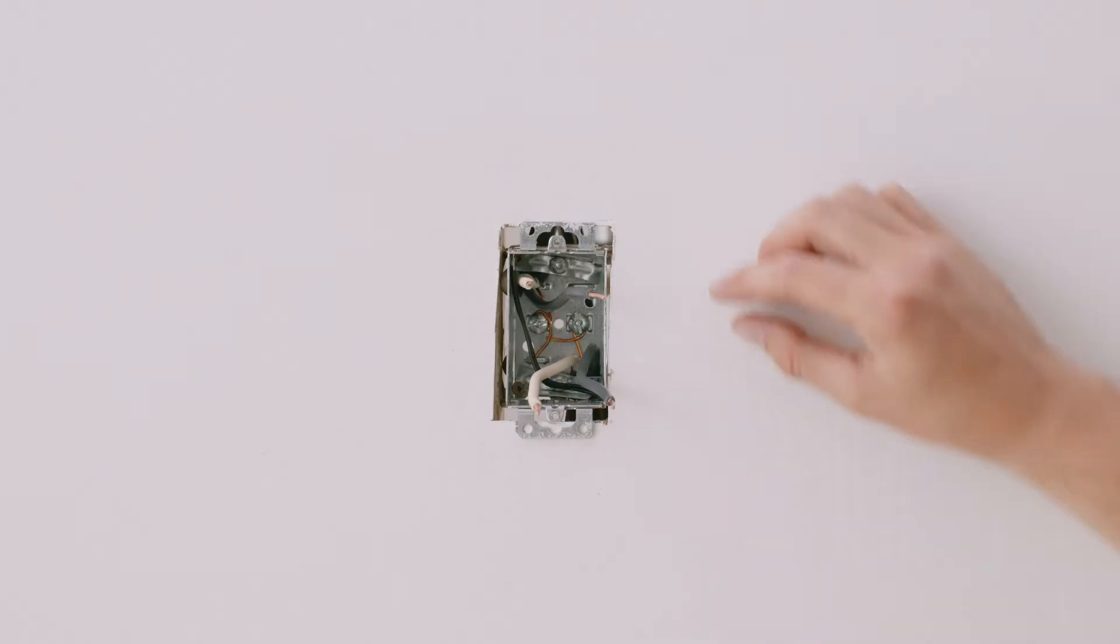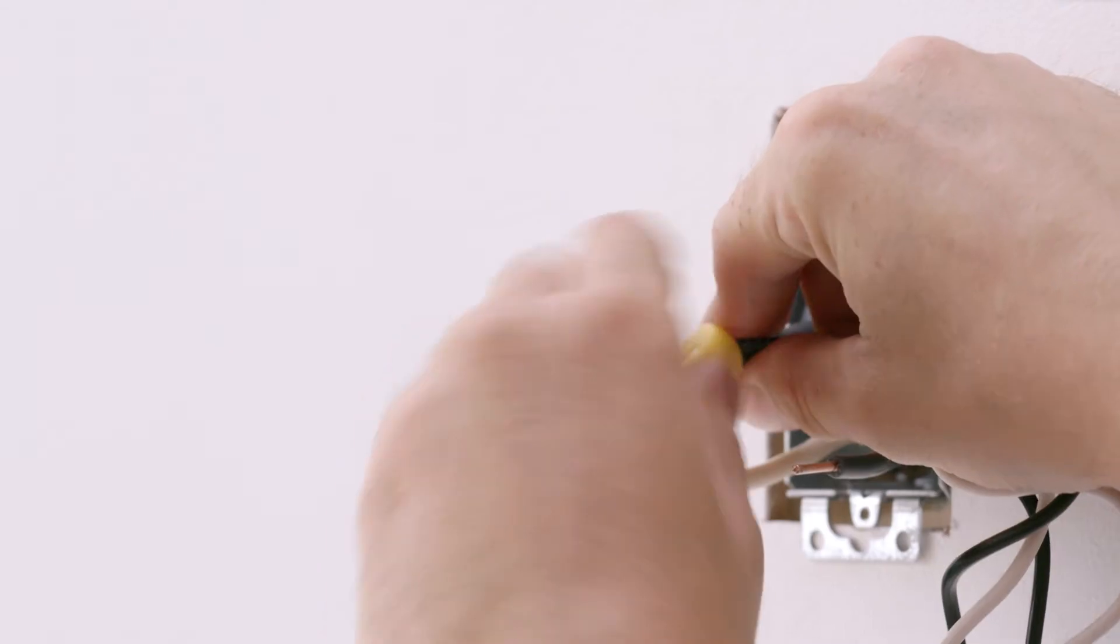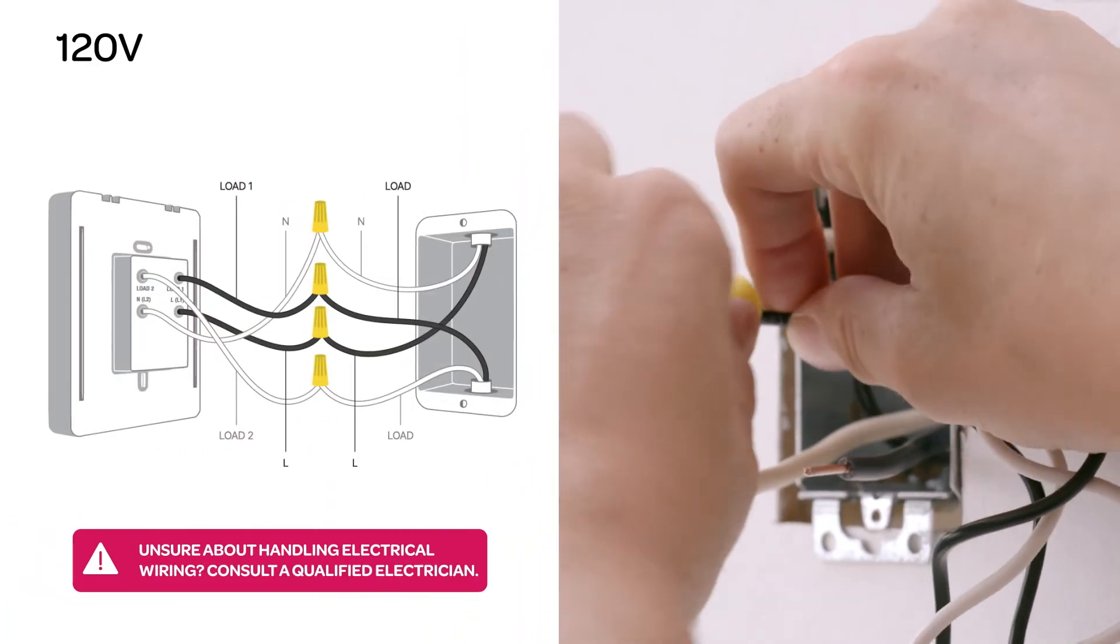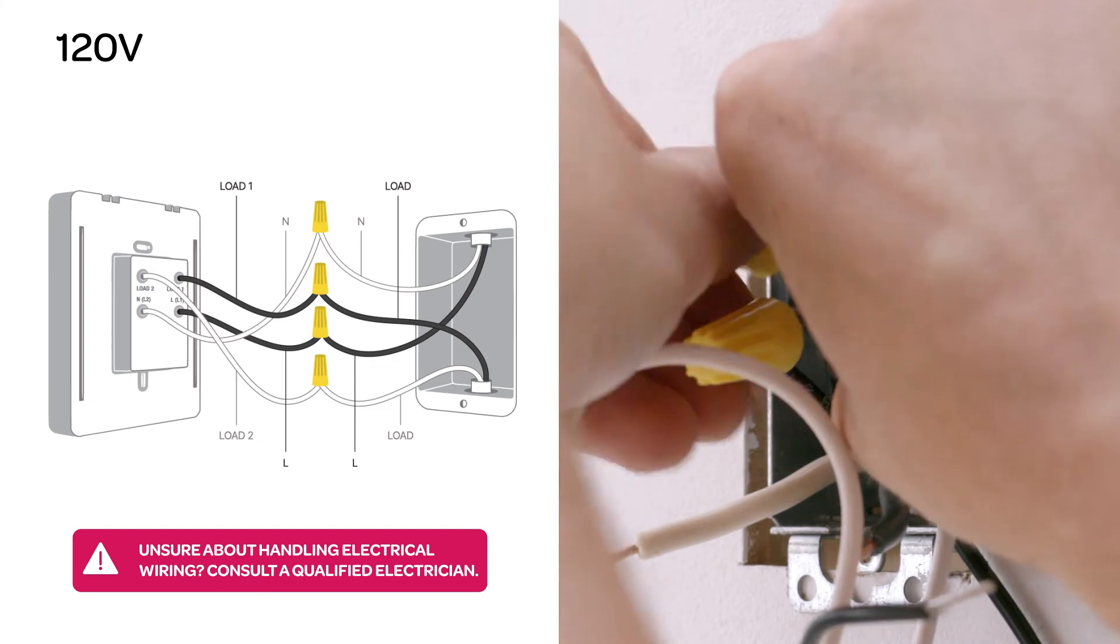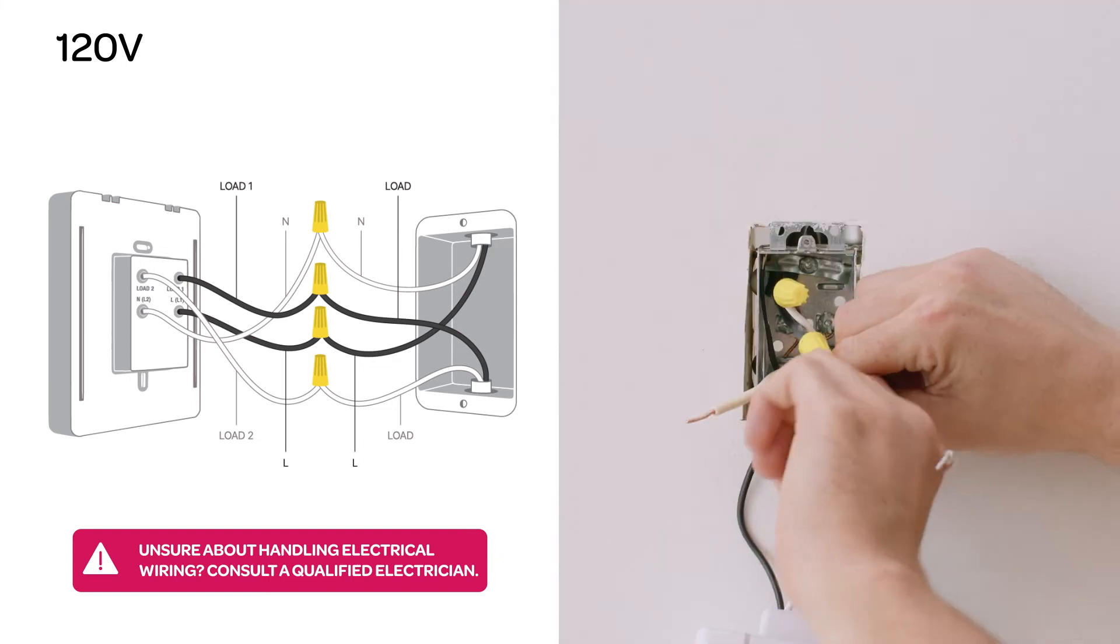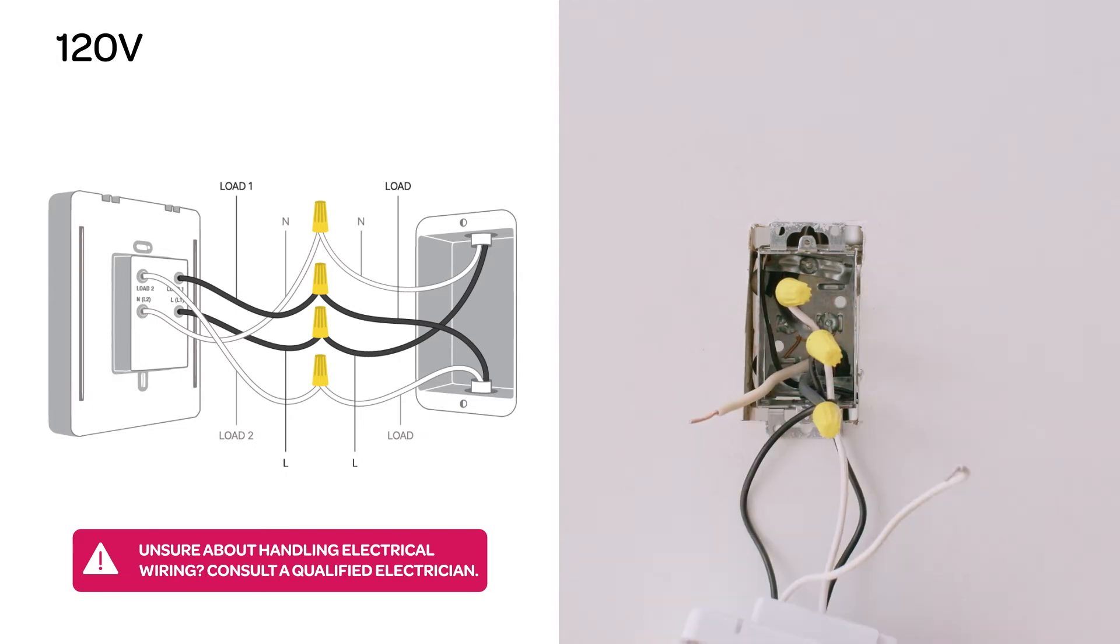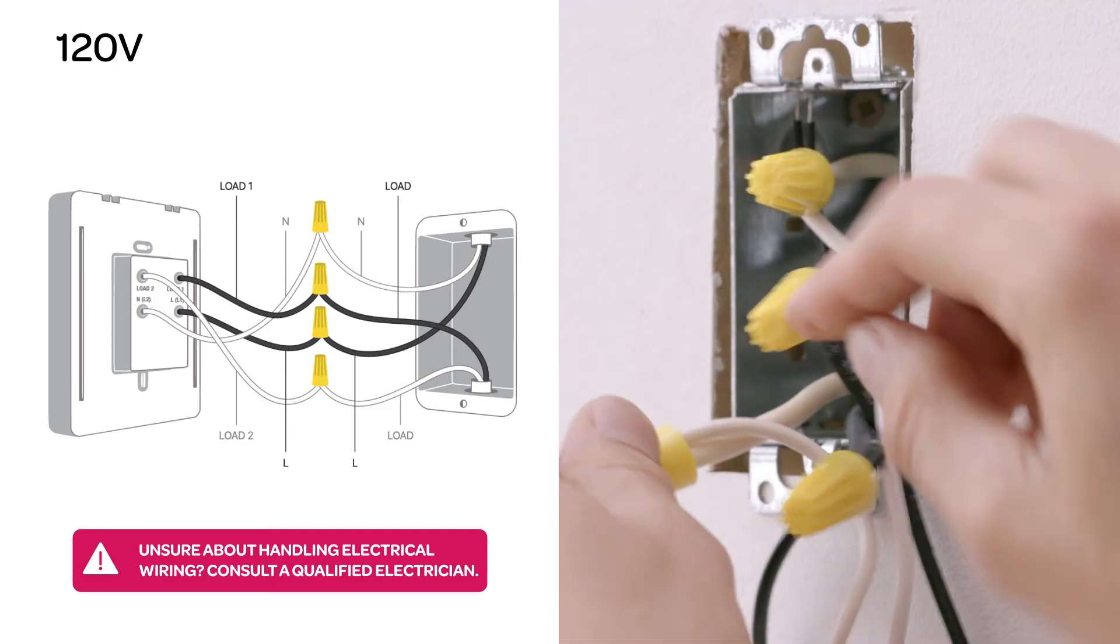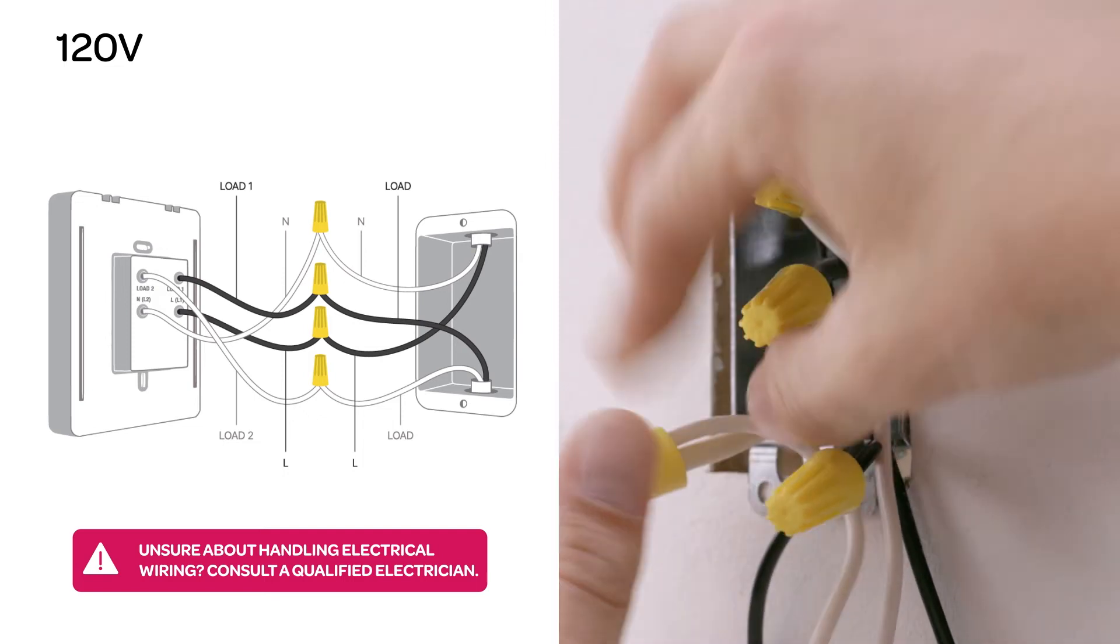In a 120 volt system, you'll see two black wires and two white wires. Using the new wire nuts included with your Mesa, connect the black wire that brings power from the electrical panel to your Mesa's L1 wire. Then, connect the white wire from your panel to your Mesa's neutral wire. Next, connect the black wire that goes to your heating mat to your Mesa's L1 wire. Then, connect the white wire going to your heating mat to your Mesa's L2 wire.